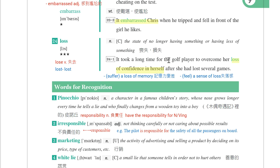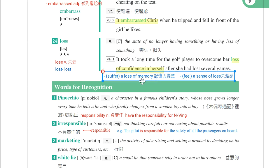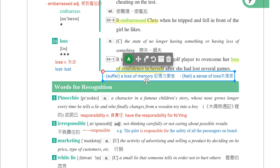It took a long time for the golf player to overcome her loss of confidence in herself after she had lost several games。花了很长的时间，这个高尔夫球选手去克服对自己的信心的失去，在她失了几场比赛之后。Loss of confidence是失去自信。我也可以说loss of memory，记忆力变差；I suffer a loss of memory。